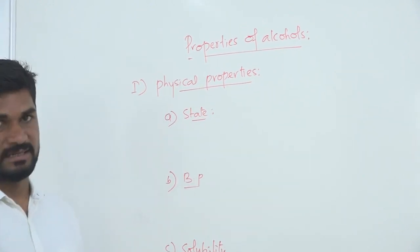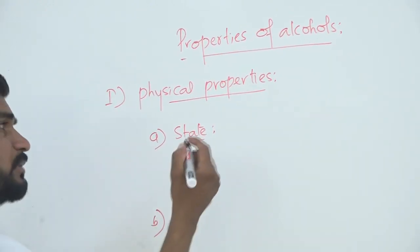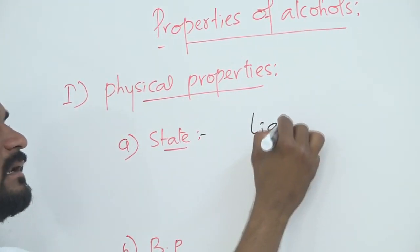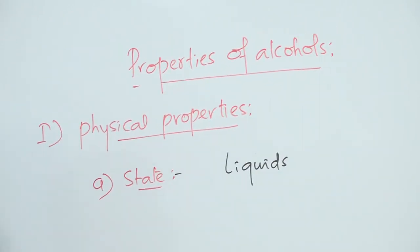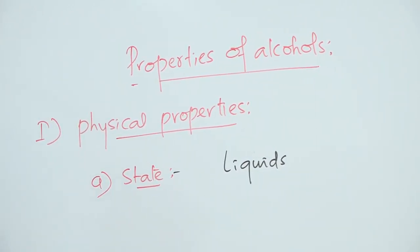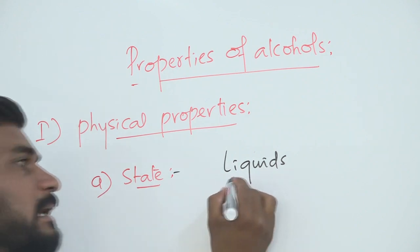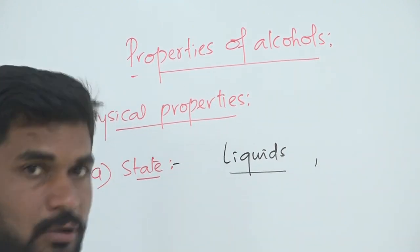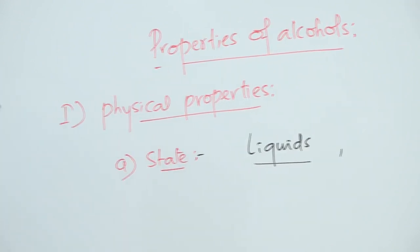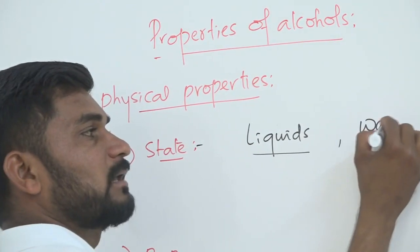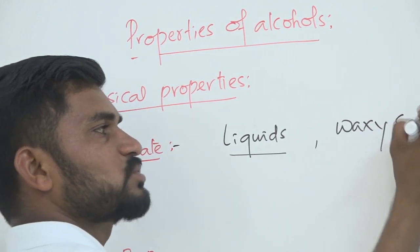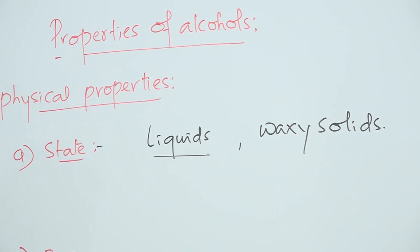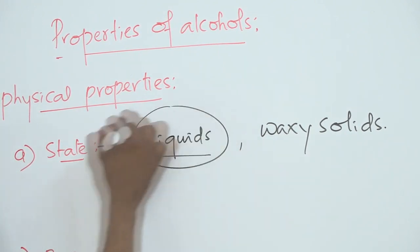The first physical property is physical state — how they appear. The lower members of alcohols, meaning alcohols which have fewer carbon atoms, exist as liquids. Higher members of alcohols, meaning alcohols with more carbon atoms, exist as waxy solids.